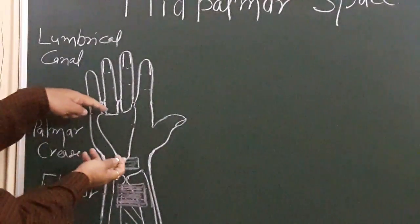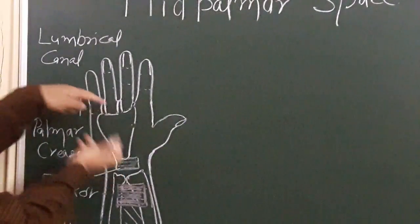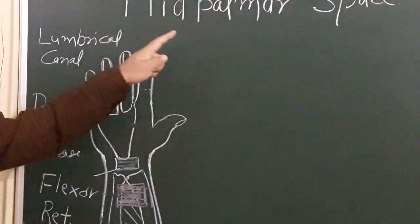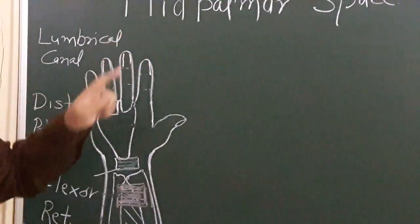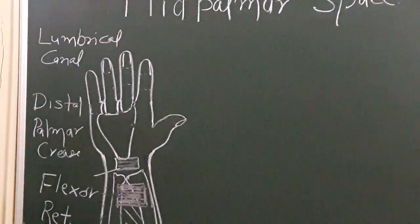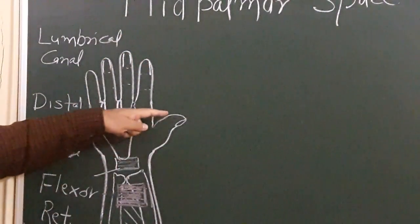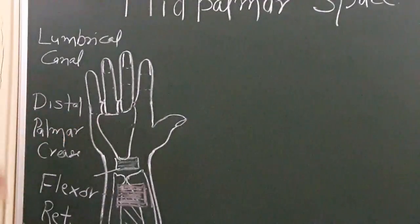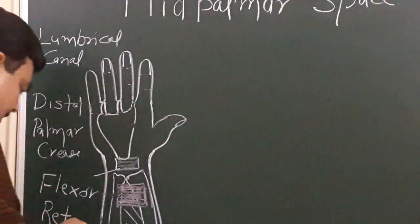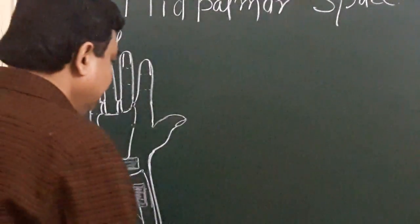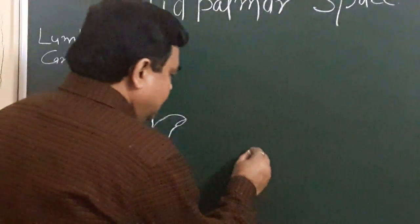This is the mid-palmar crease. If you take a transverse section at this level, you will find the following structures.